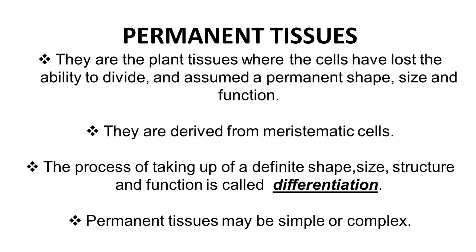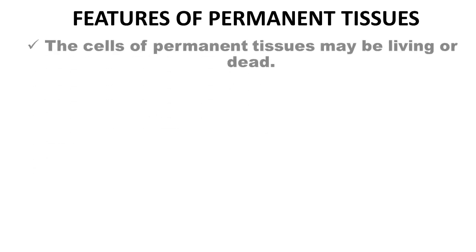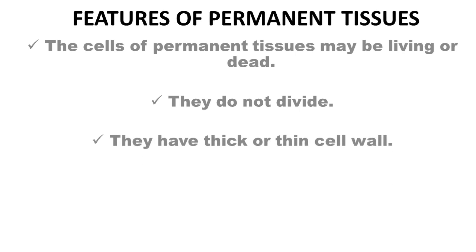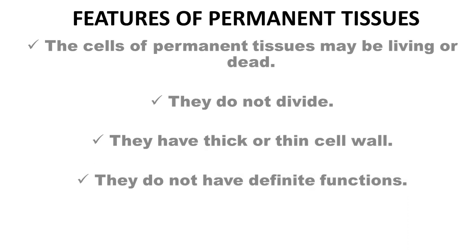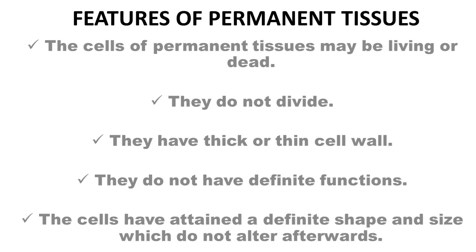Once meristematic cells lose the ability to divide, they become permanent cells, attaining a permanent shape, size, and function. This process is known as differentiation. Permanent tissues are classified as simple and complex. The features of permanent tissues are: cells may be living or dead; cells do not divide; they have thick or thin cell walls; and cells have attained a definite shape and size which does not alter afterwards.